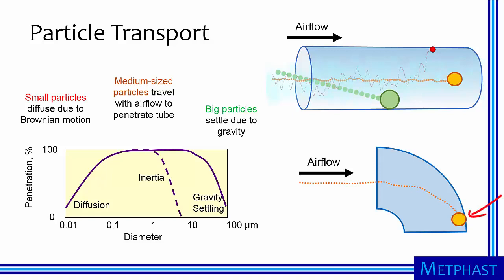Bends can cause particles to deposit on walls due to inertia, so minimizing the number of bends in a tube is also favorable.